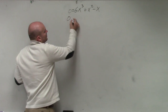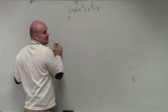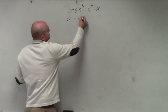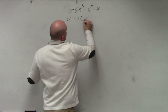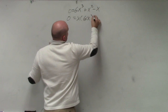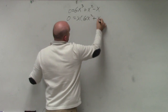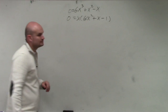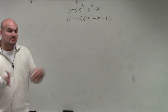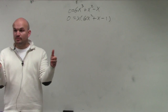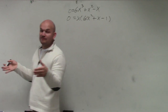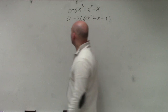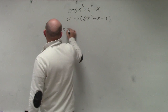I look at common terms. I can see they have a common x. So I have x times the quantity 6x squared plus x minus 1. Now I have my polynomial written as a product of factors equal to 0, so I can apply the zero product property.